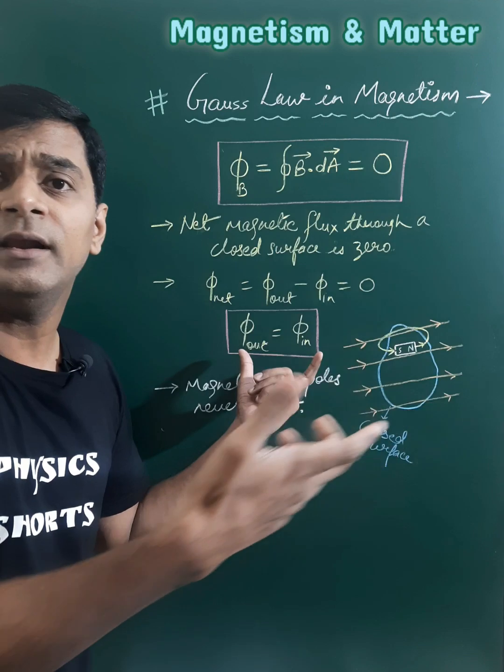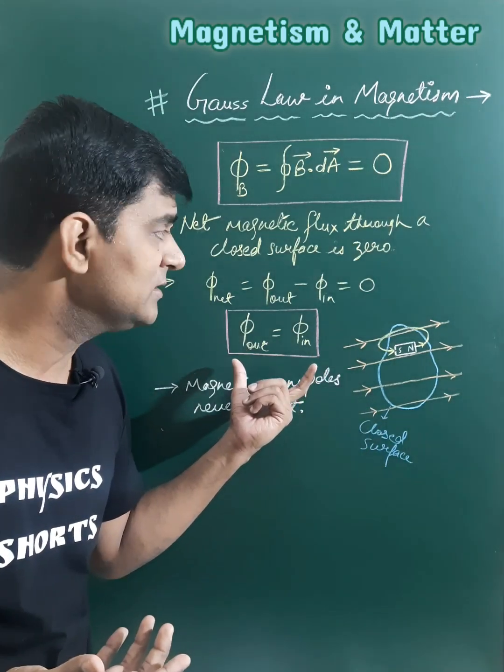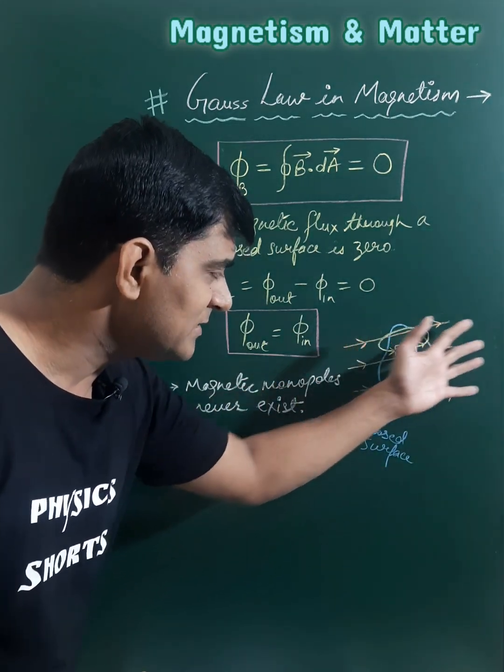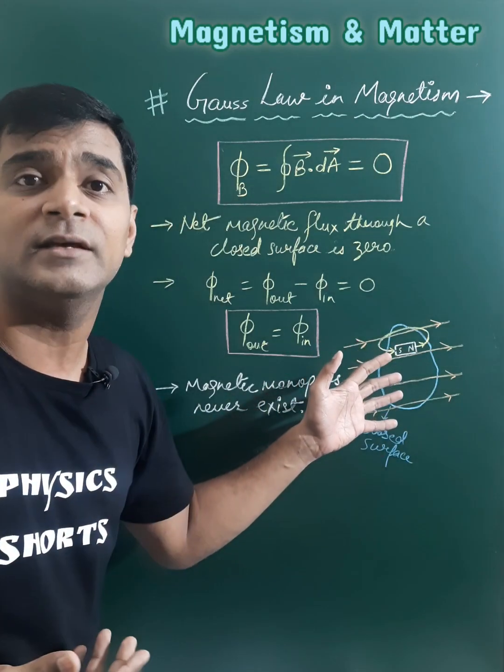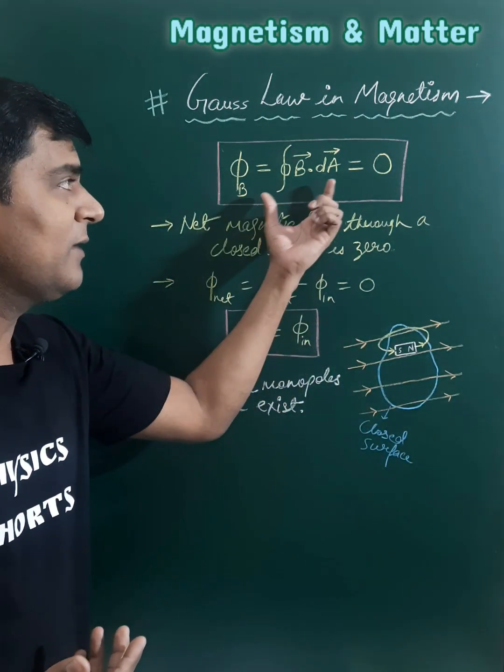Phi is basically the number of field lines passing perpendicular to the surface. So the number of field lines exiting or leaving this closed surface equals the number of field lines entering the surface, and hence we can say the net magnetic flux is zero.